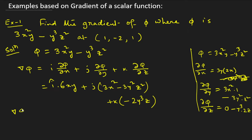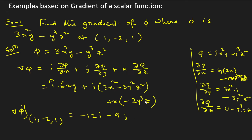Now we evaluate the gradient at the point (1, −2, 1). Substituting x = 1 and y = −2 into 6xy gives −12 for the i-cap component. For j-cap: 3(1)² − 3(−2)²(1)² = 3 − 12 = −9. For k-cap: −2(−2)³(1) = −2(−8)(1) = +16. So the answer is −12 i-cap − 9 j-cap + 16 k-cap.